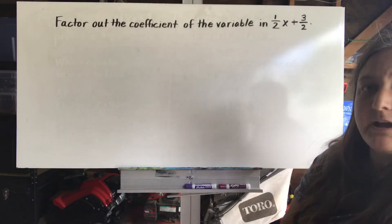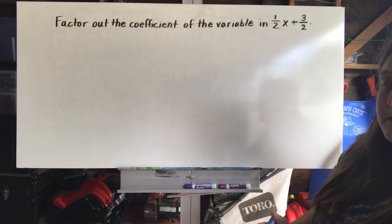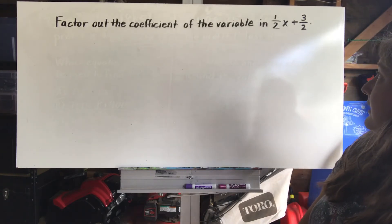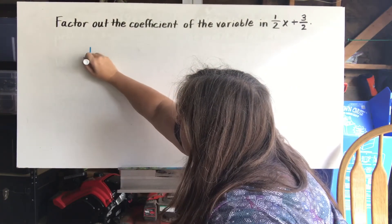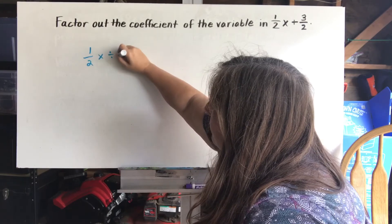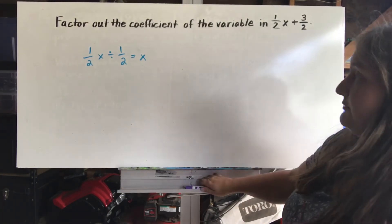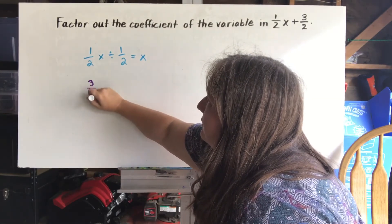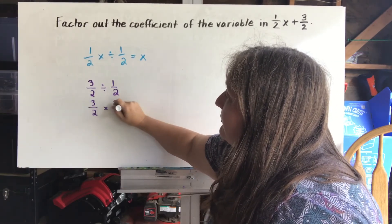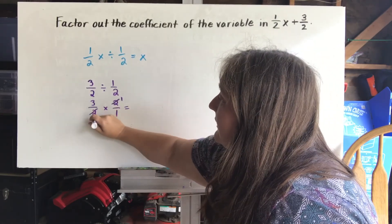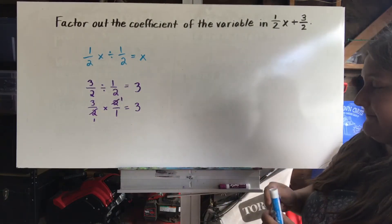This time we're being asked to factor out the coefficient of the variable. x is my variable, and the coefficient is 1 half. I'll start by rewriting my terms as a product of factors. For 1 half x, if I divide out the 1 half, it leaves me with x. For the term 3 over 2, dividing out the coefficient means multiplying 3 over 2 by 2 over 1, and after cross-reducing I get 3. So when I factored out 1 half from 3 over 2, I got 3.